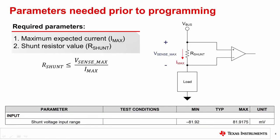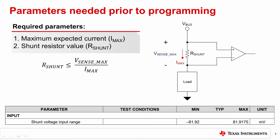Now let's get started on the steps to configure these devices for current and power readings. We need to know two parameters from the application: maximum expected current, or Imax, and shunt resistor value, or Rshunt. When selecting the shunt resistor value, we should keep in mind the maximum allowable input voltage range of the device.